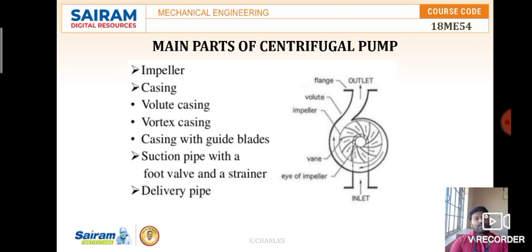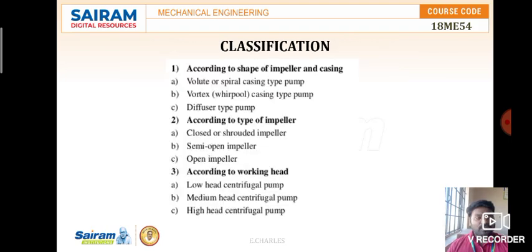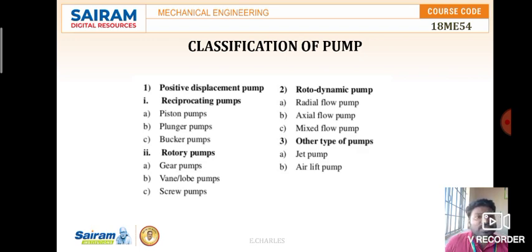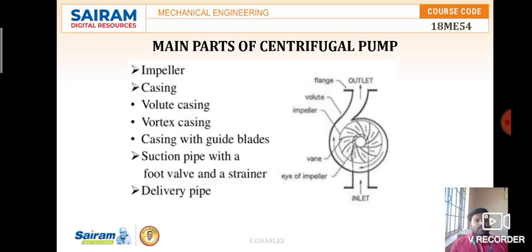To summarize: pump classifications include positive displacement (reciprocating — piston, plunger, bucket pumps), rotary (gear, vane/lobe, screw pumps), rotodynamic (radial flow, axial flow, mixed flow pumps), and other types (jet pump, air lift pump). The main parts of a centrifugal pump are the impeller, casing (volute, vortex, casing with guide blades), suction pipe with foot valve and strainer, and delivery pipe.